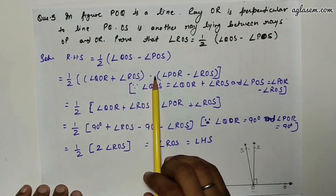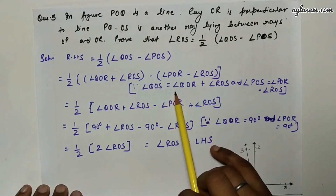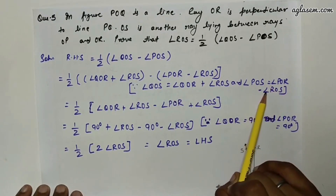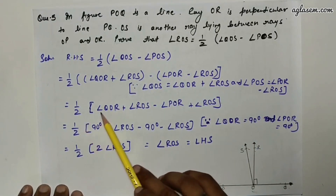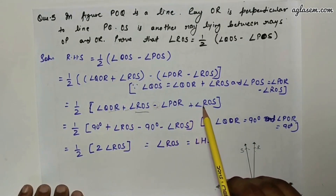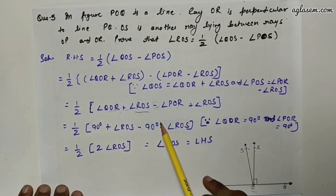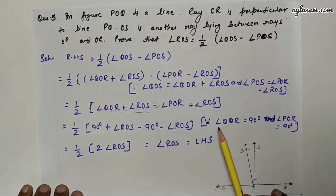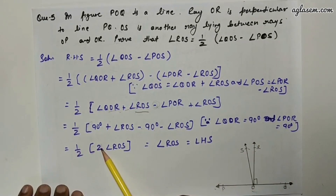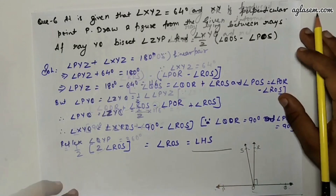Since angle POS = angle POR − angle ROS, substituting: RHS = ½[(angle QOR + angle ROS) − (angle POR − angle ROS)] = ½[90° + angle ROS − 90° + angle ROS] = ½ × 2·angle ROS = angle ROS = LHS. Hence proved.